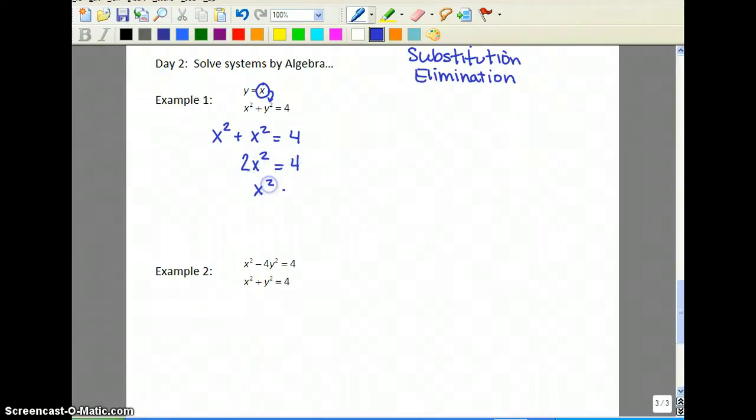Divide by 2. Take the square root of both sides, and we get x is equal to plus or minus root 2.